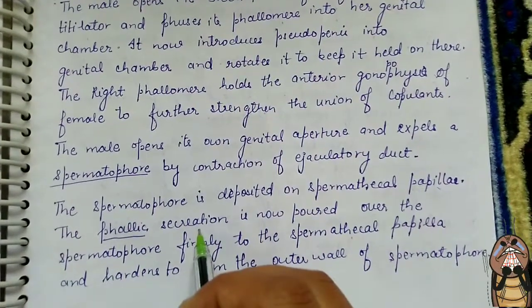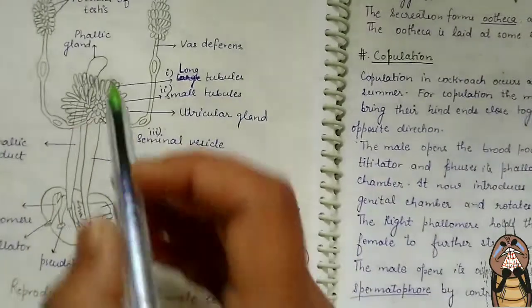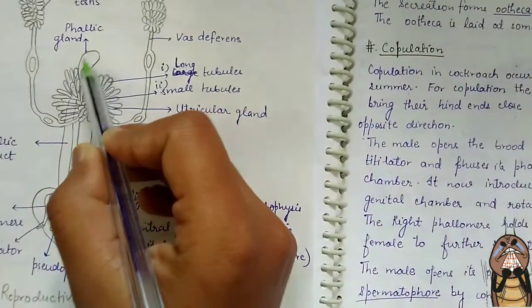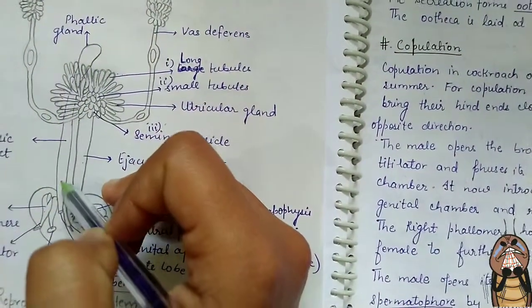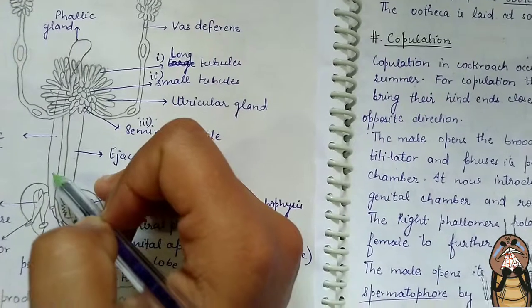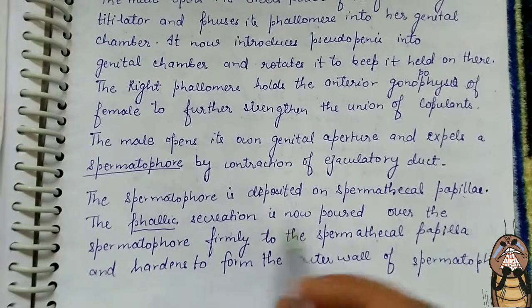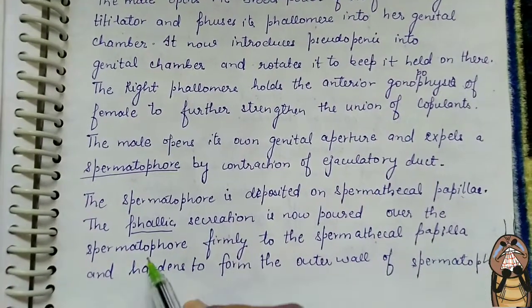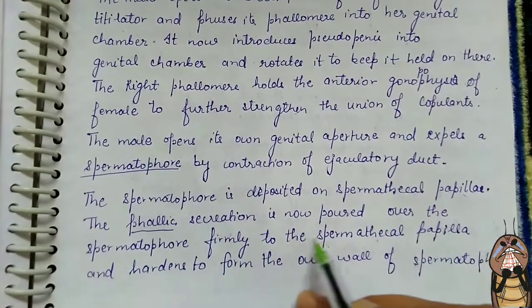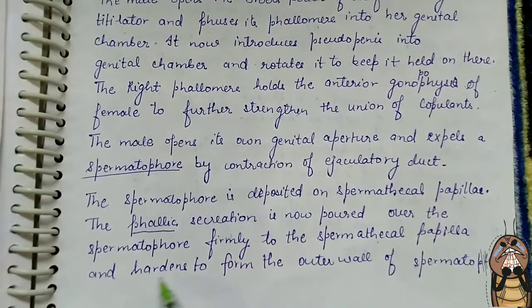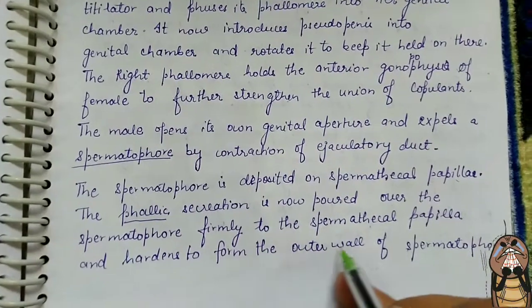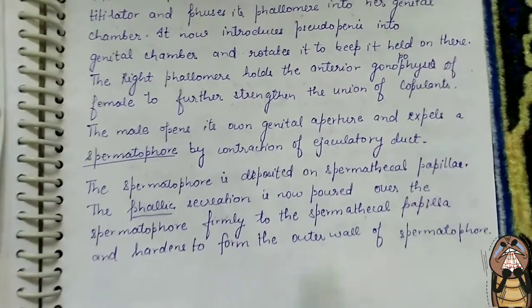Now a phallic secretion occurs from the phallic gland. This phallic gland secretion forms the outer layer of the spermatophore wall. It is poured over the spermatophore on the spermatical papillae and hardens to form the outer wall of the spermatophore.